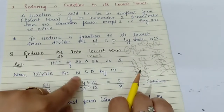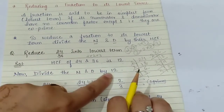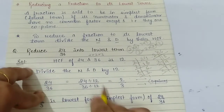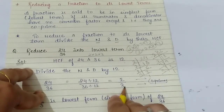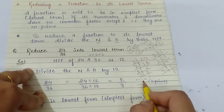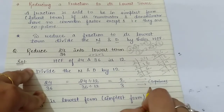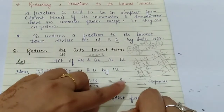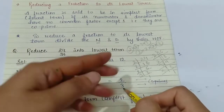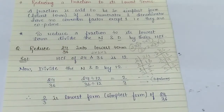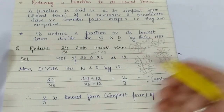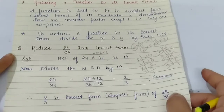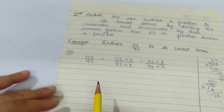Now divide the numerator and denominator by 12. We get 2 upon 3. Now 2 and 3 are co-prime numbers, so we can say that 2/3 is in its simplest form — it cannot be divided further by any other number. So 2/3 is the lowest form of this fraction.